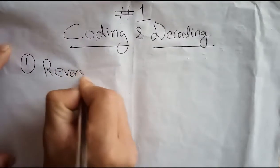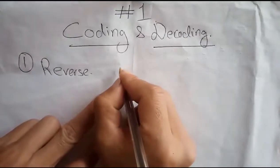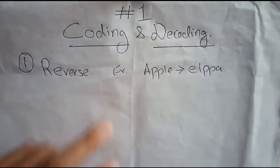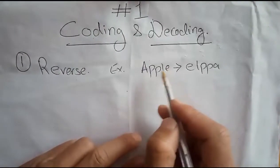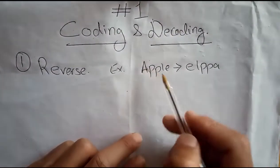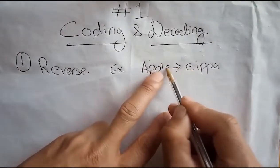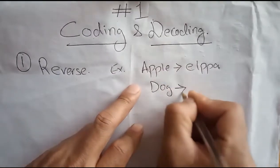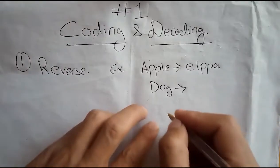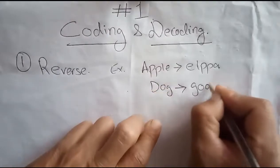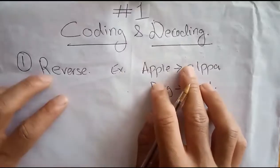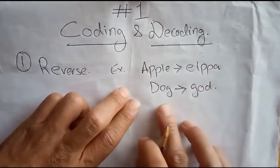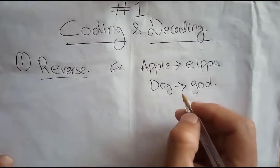Let's start with the first type: Reverse Coding. If APPLE was coded as ELPPA, the message is simply reversed. So how will DOG be coded? We code it as G-O-D. So the first type of coding is reversed — where we reverse the alphabets. If APPLE is reversed, it becomes ELPPA.